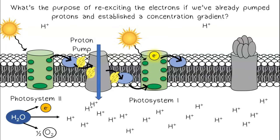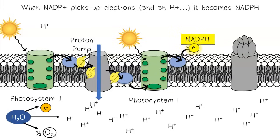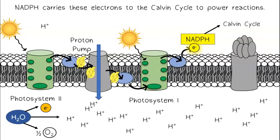What's the purpose of re-exciting the electrons if we've already pumped protons and established a concentration gradient? High-energy electrons are going to be picked up by a molecule called NADP+. NADP+ is the final electron acceptor. When NADP+ picks up electrons, it becomes NADPH.